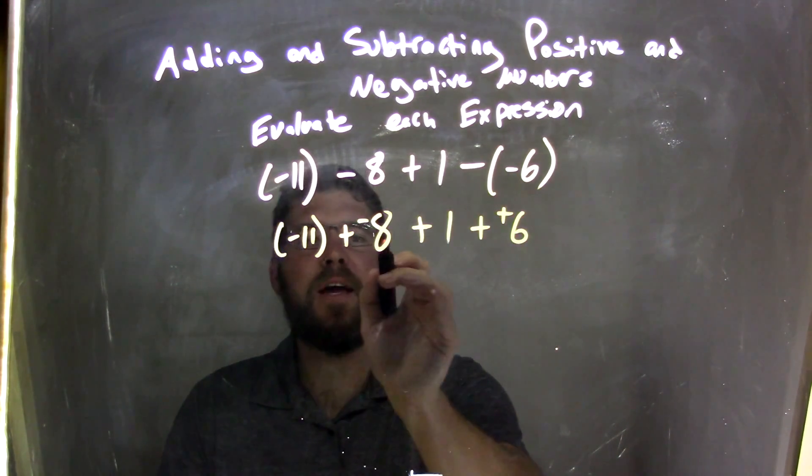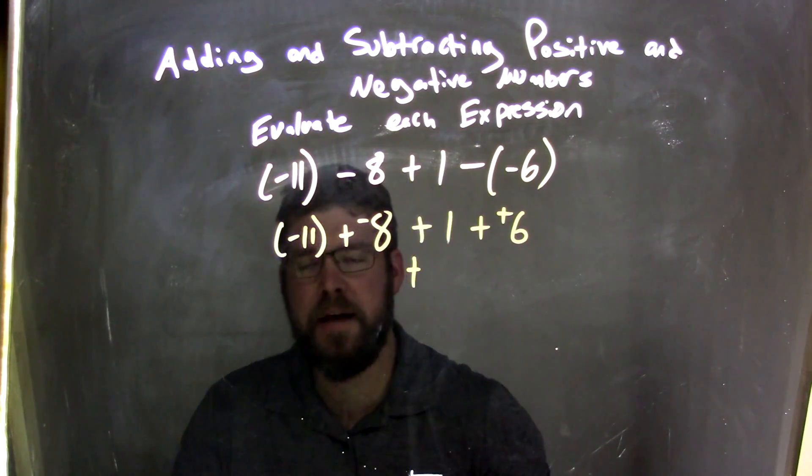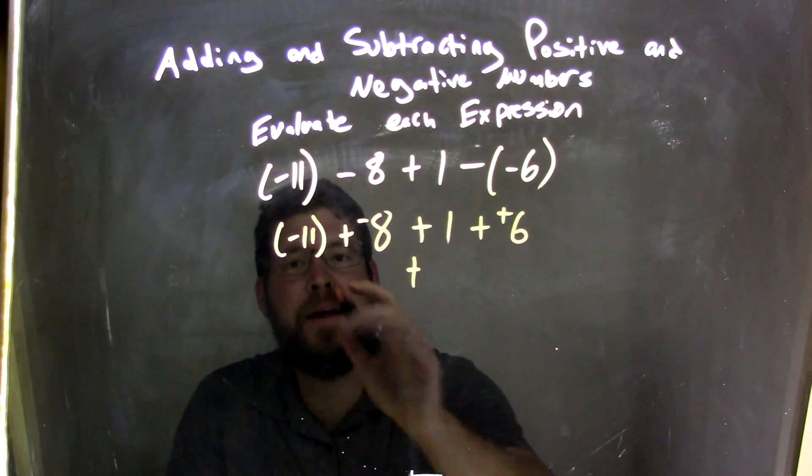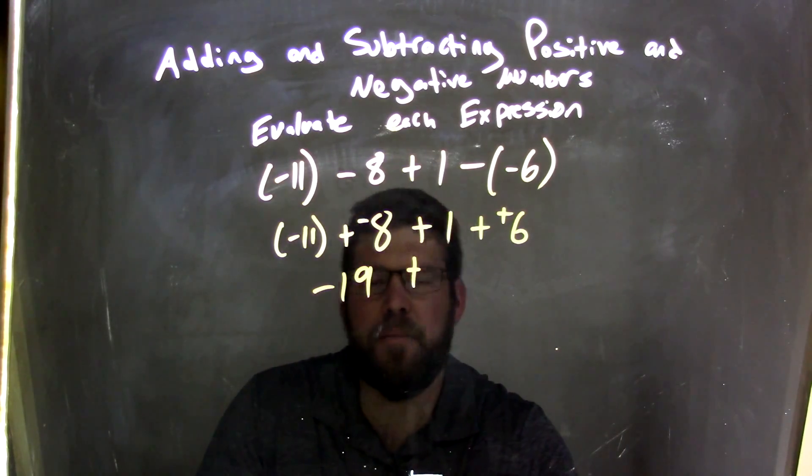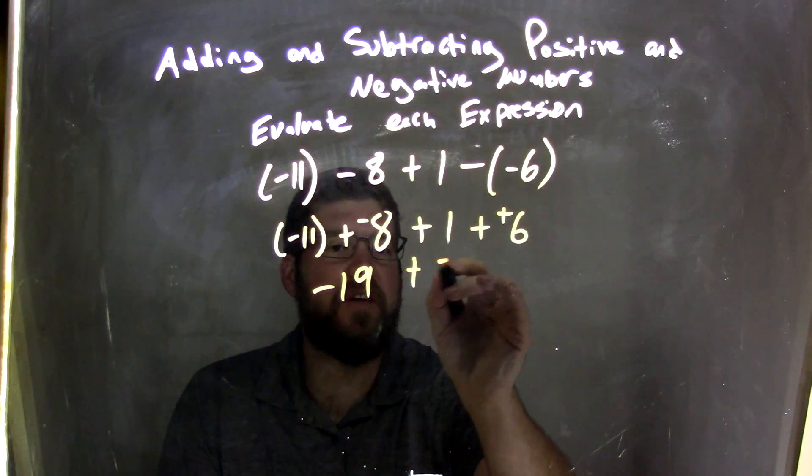So I have my two negative numbers and two positive numbers. I'm going to break it apart in two parts. Negative 11 plus negative 8, they're both negative, so we're going to end up with negative 19, right? Just like 11 plus 8 would be, negative 11 plus negative 8 is negative 19. Then 1 plus 6 is just 7.